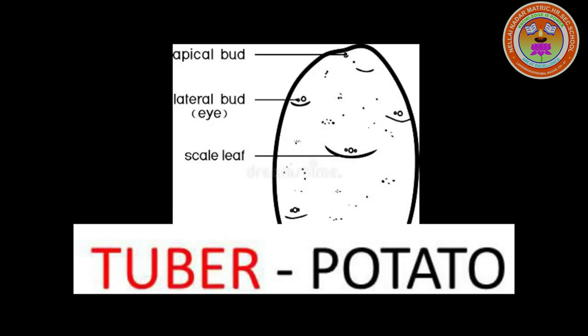This is Tuber. It is a fleshy part of a plant which stores food. Potato is the most common tuber largely used as food. The lower part of the potato gets covered by the earth where the adventitious branches grow. It is covered with a number of depressions called eyes, and each eye represents a node. It does not contain adventitious roots.